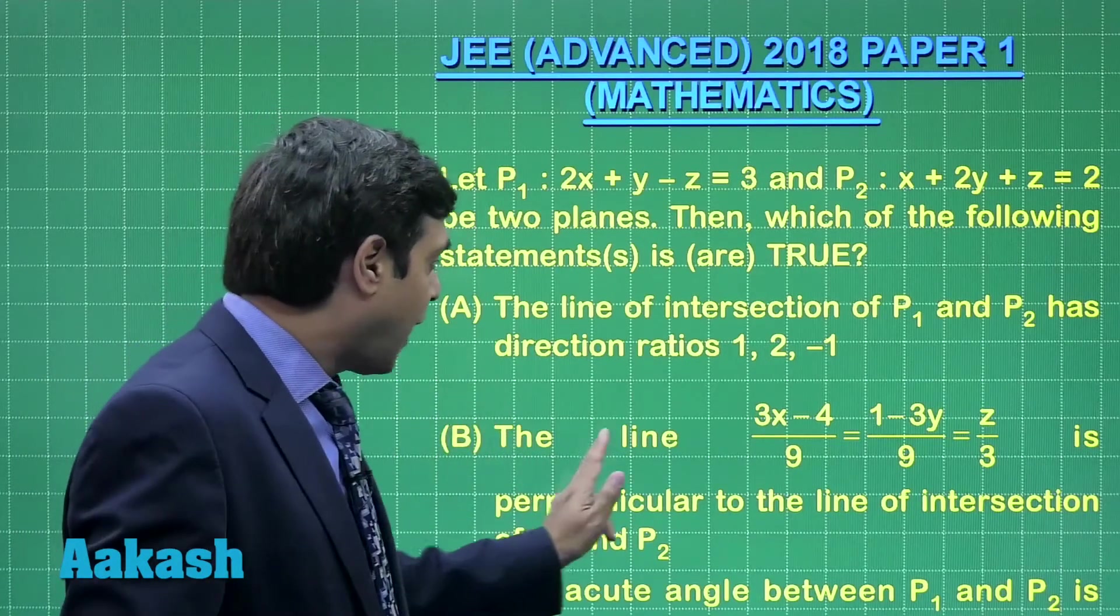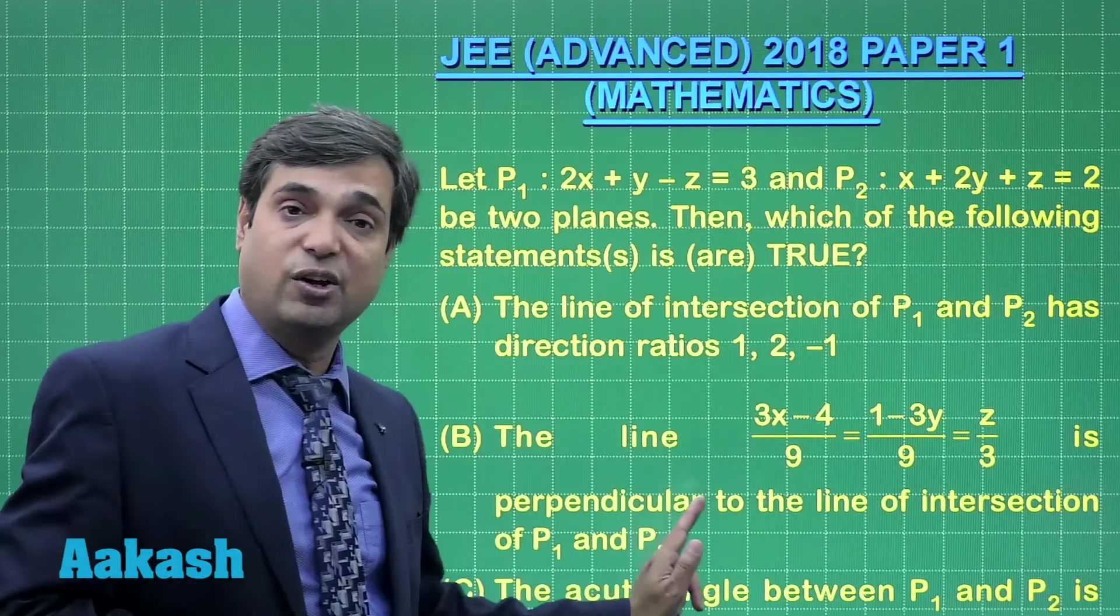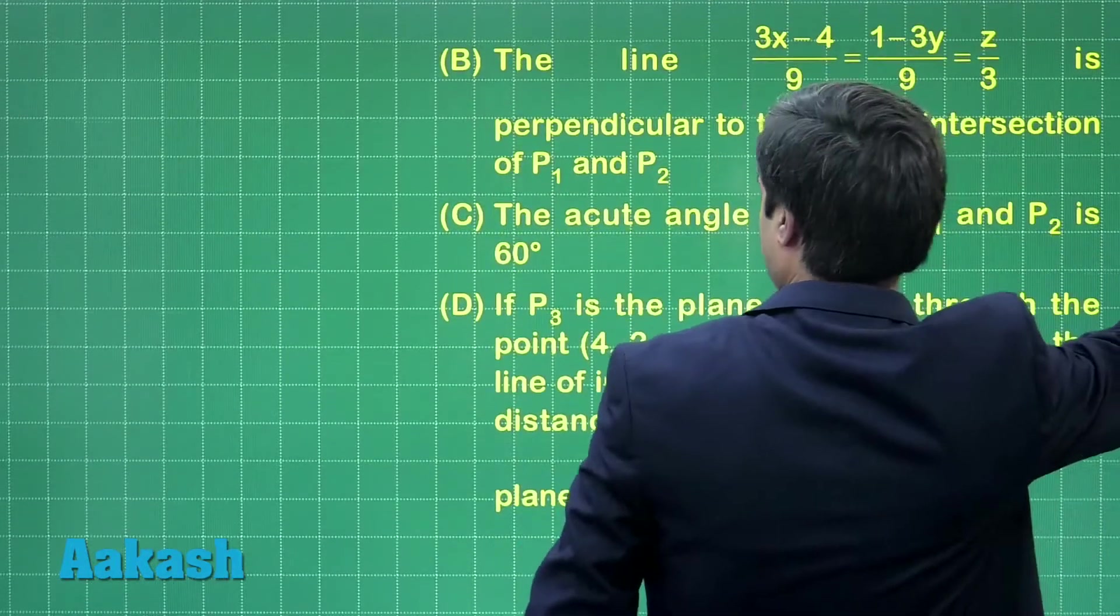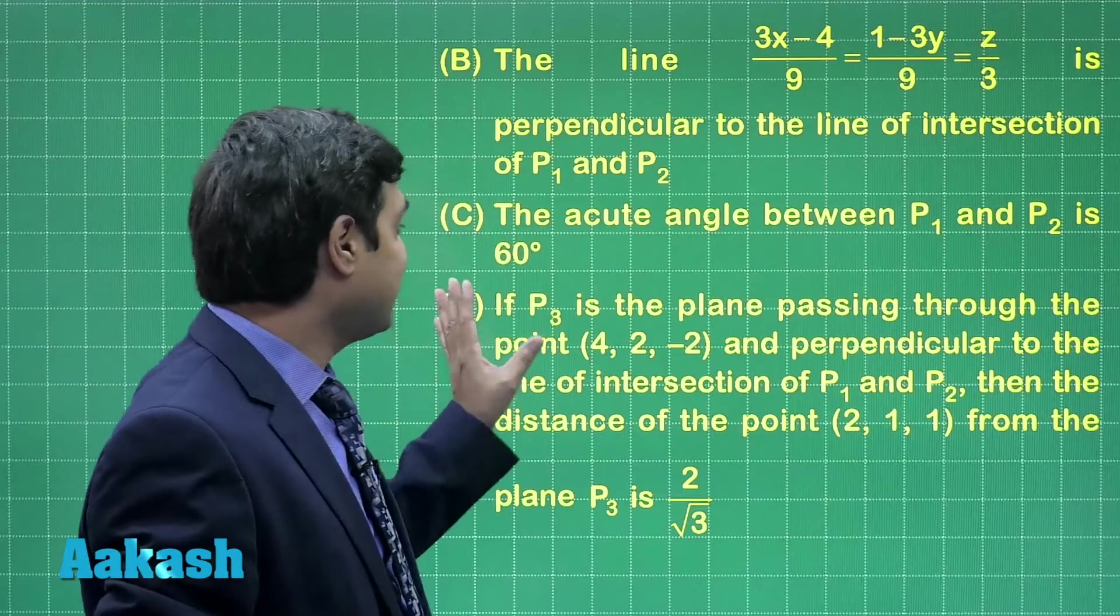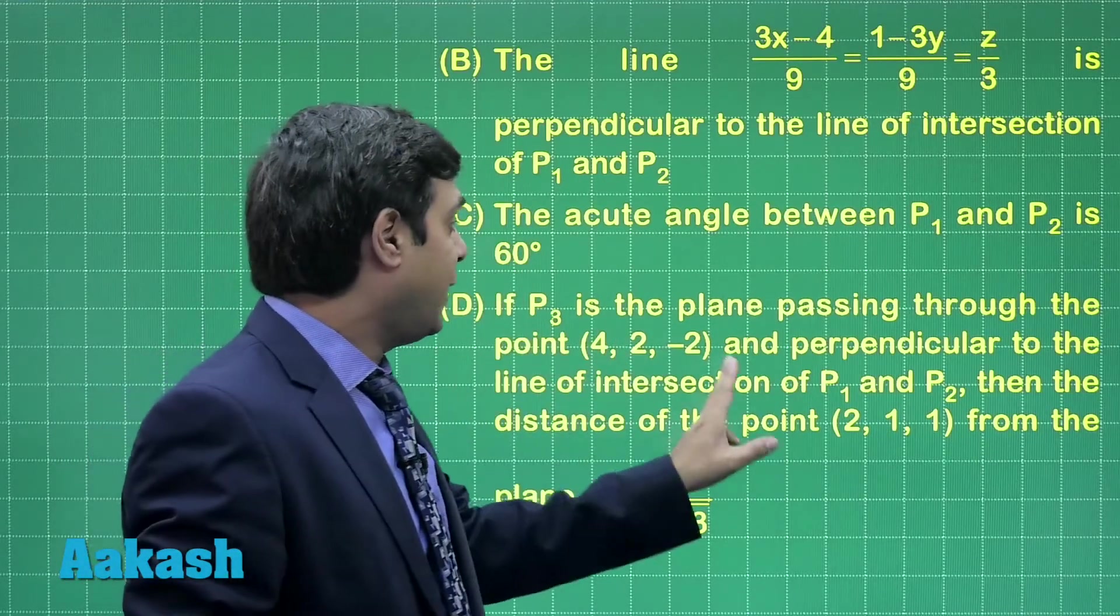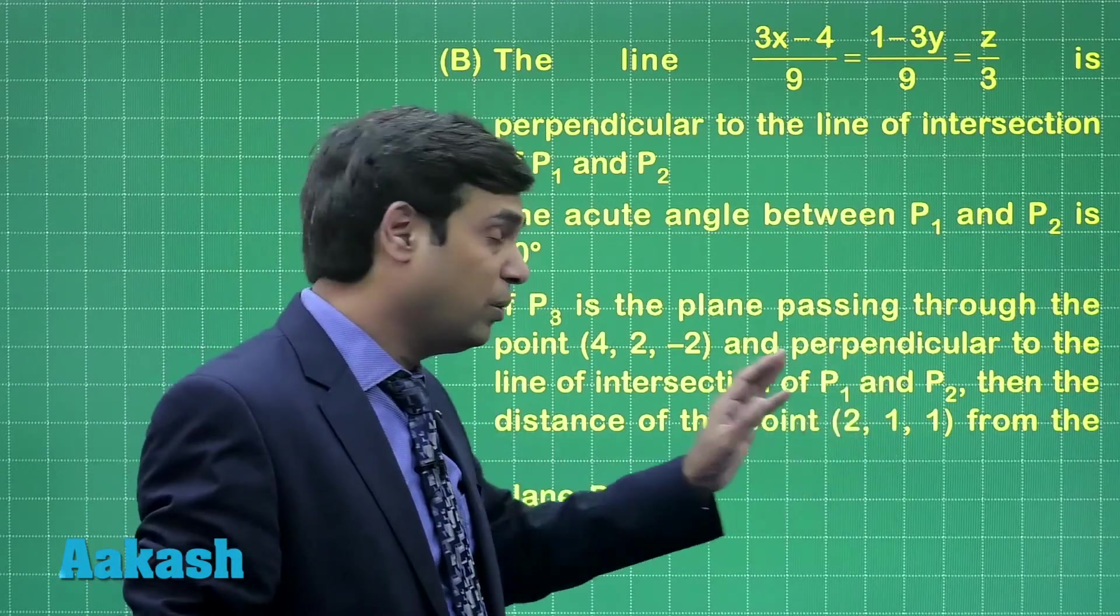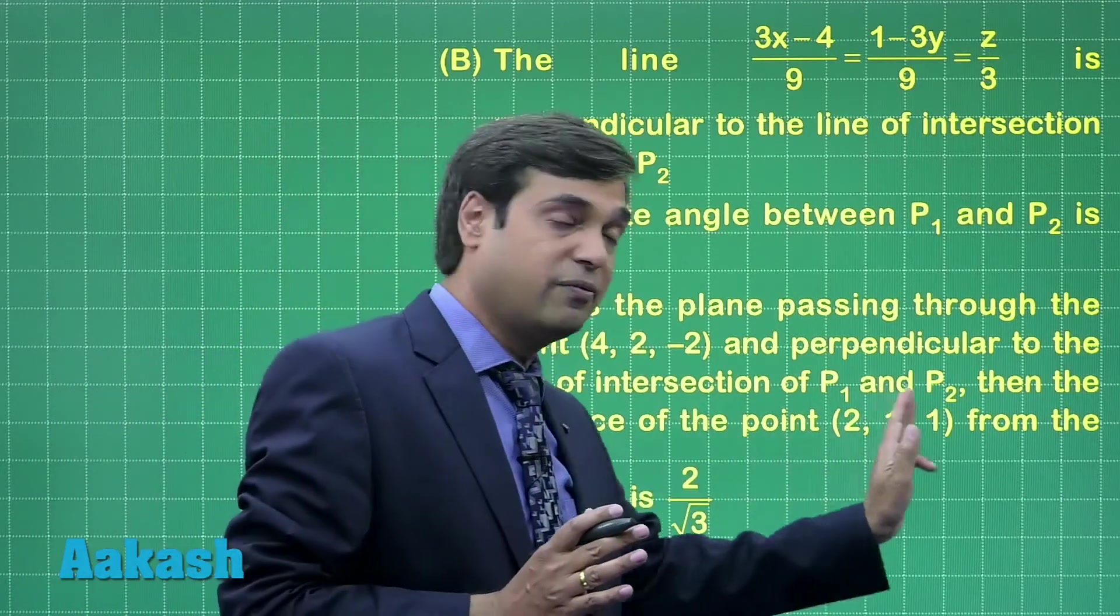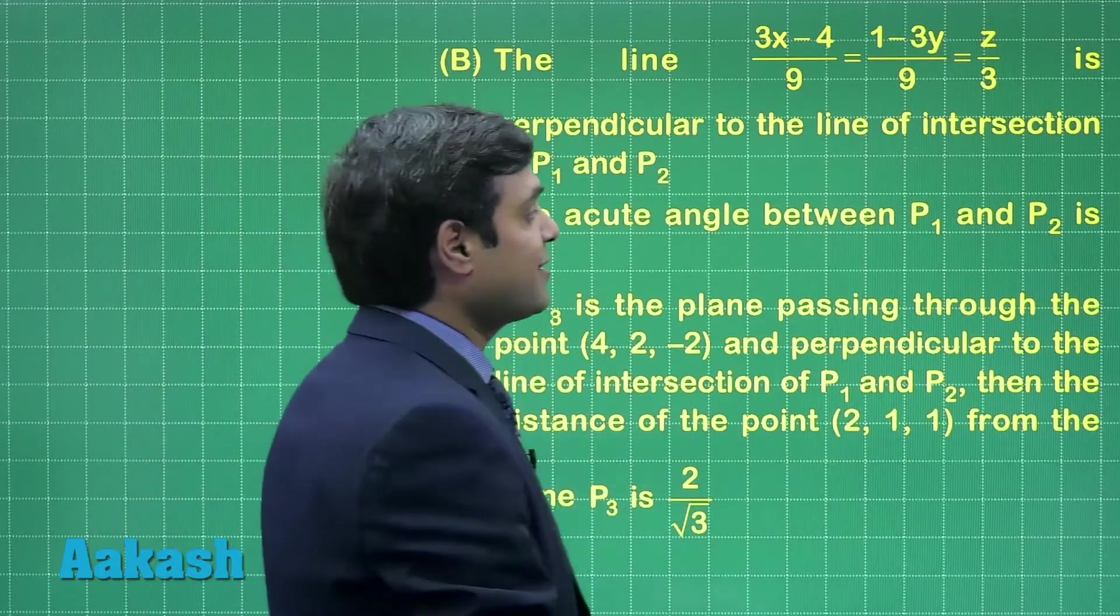Second option is the line this one is perpendicular to the line of intersection of P1 and P2, similar type. Option number 3 is the acute angle between 2 planes, and option number 4 is another plane P3 with given point and the direction ratios as perpendicular to the line of intersection of P1 and P2, then we have to find the distance of point (2,1,1) from that plane P3. After summarizing it, let us start this one.